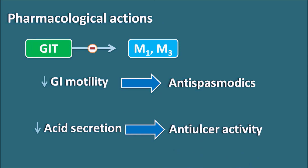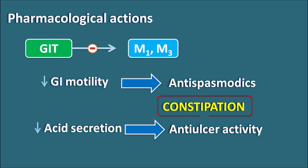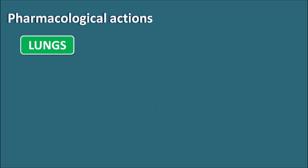Anticholinergics can be used as anti-ulcer agents, but they decrease only acid secretion stimulated by the parasympathetic system. Gastric acid secretion stimulated by mediators like histamine or gastrin is not controlled by anticholinergics. Also, since anticholinergics decrease GI motility, they can produce constipation as one of their side effects.